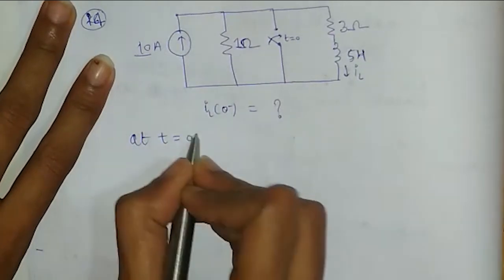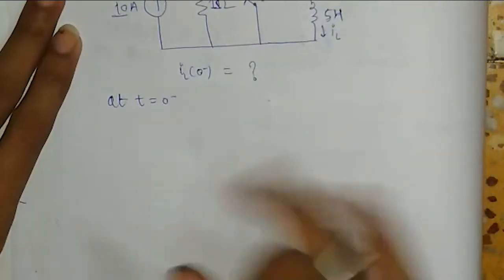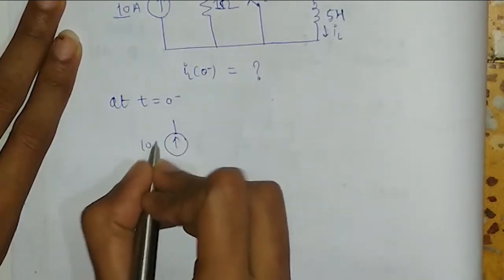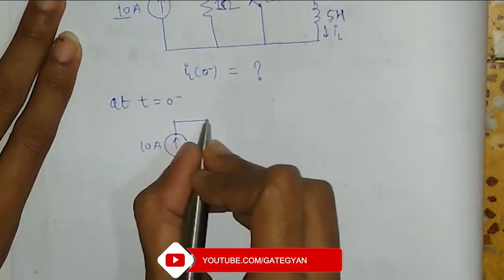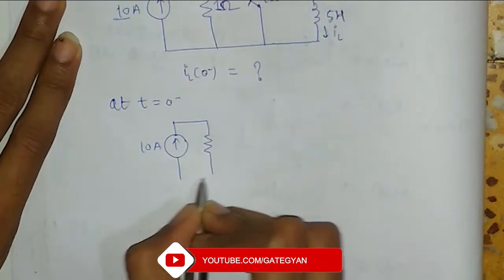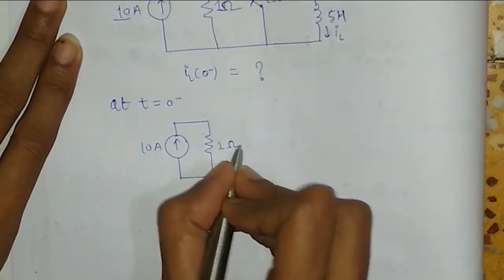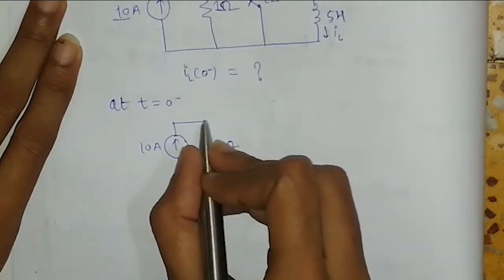my circuit will look like this: 10 ampere, this 1 ohm. As this switch is open, it will be open only.